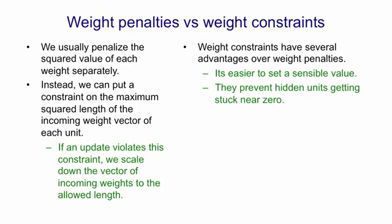Using weight constraints also prevents hidden units getting stuck near zero with all their weights being tiny and not doing anything useful, because when all their weights are tiny there's no constraint on the weight so there's nothing preventing them from growing. Weight constraints also prevent the weights from exploding.